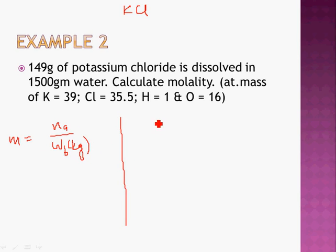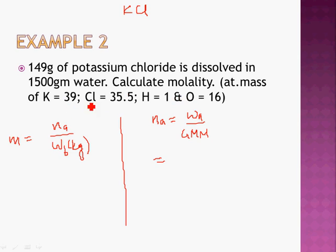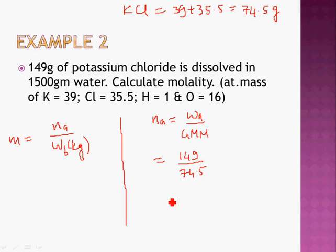Molality = moles of solute ÷ mass of solvent in kg. Moles of KCl = mass ÷ gram molar mass. The question provides atomic masses: potassium = 39, chlorine = 35.5. So molar mass of KCl = 39 + 35.5 = 74.5 grams per mole. Therefore, moles of KCl = 149 ÷ 74.5 = 2 moles.